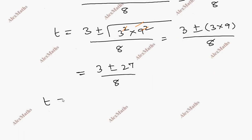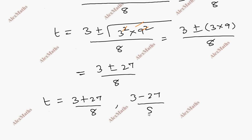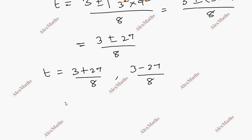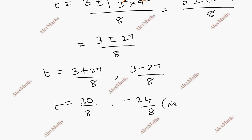So t equals 3 plus 27 divided by 8, and the other value is t equals 3 minus 27 divided by 8. The first value gives 30 by 8, and the second value gives minus 24 by 8. The second value is not possible — time cannot be negative.